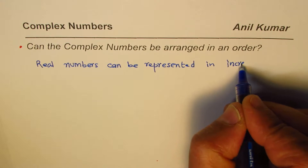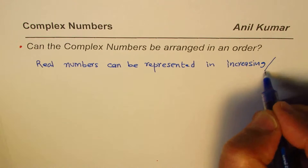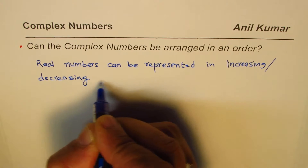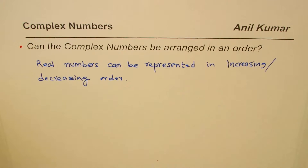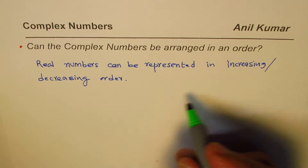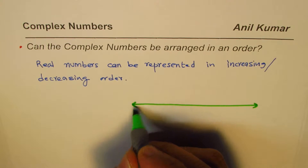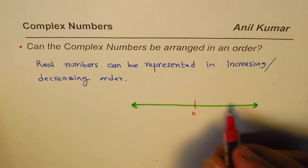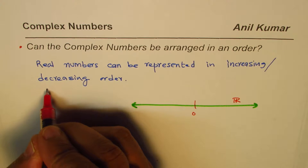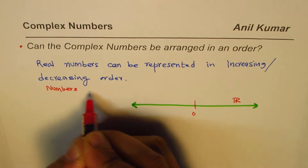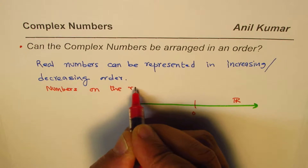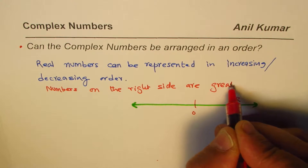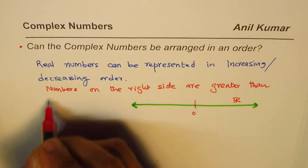Real numbers can be represented in increasing or decreasing order. The reason is that on a number line, if I have a number line where zero is marked, numbers on the right are increasing. So we say numbers on the right side are greater than those on the left.